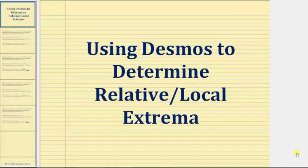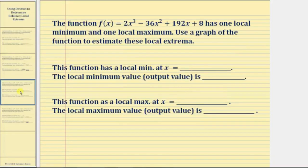Welcome to a second example on how to use the Desmos grapher at desmos.com to determine the relative or local extrema of a cubic function. The function f(x) = 2x³ - 36x² + 192x + 8 has one local minimum and one local maximum.